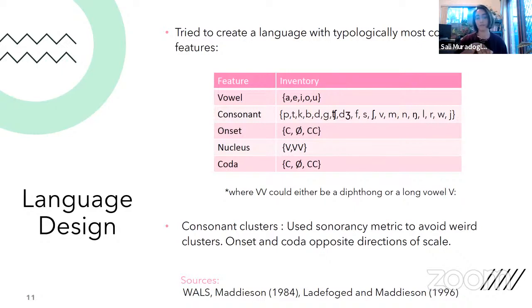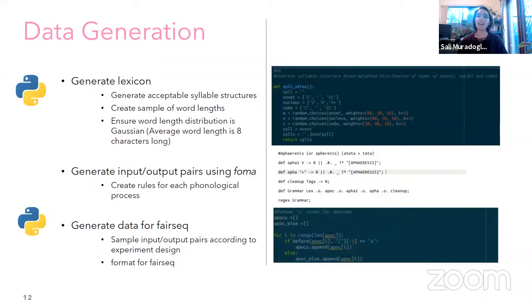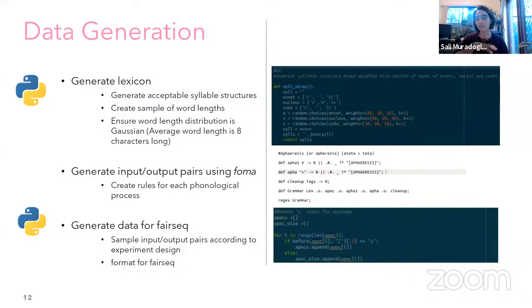The typological information came from resources listed at the bottom of the screen. In terms of how we generated the data, we started with step one: generating the actual lexicon. First, generating acceptable syllable structures given the onset, nucleus, and coda available. Then we create sample word lengths — to keep it realistic, the word length distribution is Gaussian and the average word length is about eight characters long, which seems to hold across quite a lot of languages.